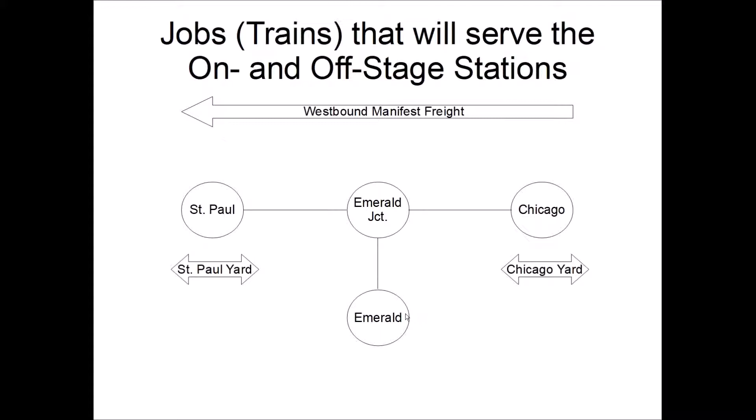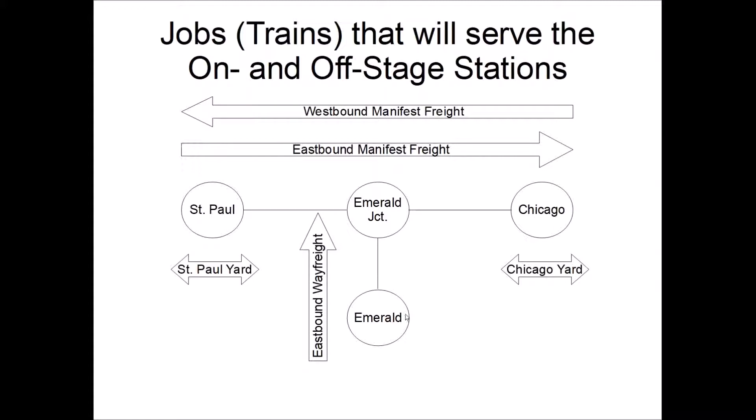And we'll also have an eastbound manifest freight that does the same thing. It'll take cars from St. Paul to Chicago, also drop off and pick up at Emerald Junction. We'll have an eastbound wayfreight that runs from Emerald into Emerald Junction, and a westbound that goes back the other way. So those are the jobs we'll need to set up.